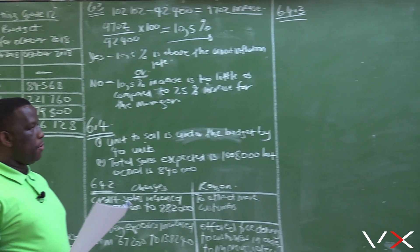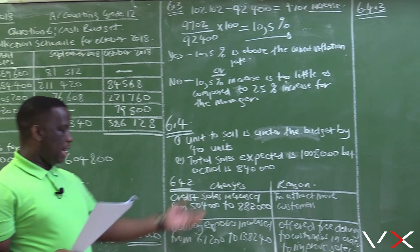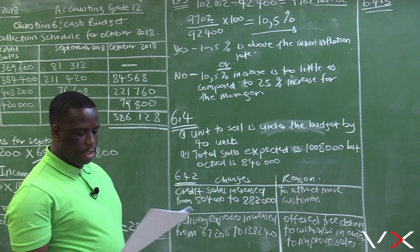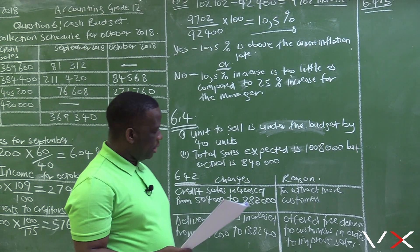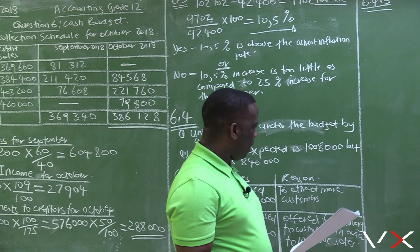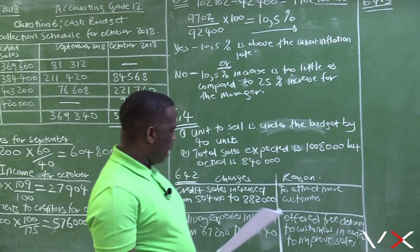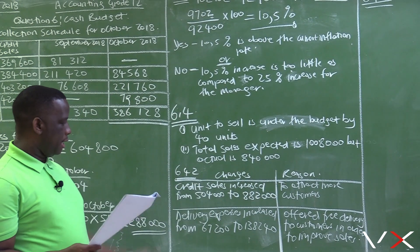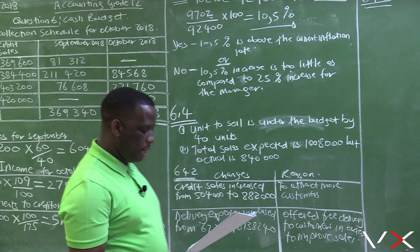6.4.2 was based on the strategies implemented by the business to deal with the competition faced in September, as a result of which sales dropped. The new strategies implemented in October include increasing credit sales and offering free delivery.